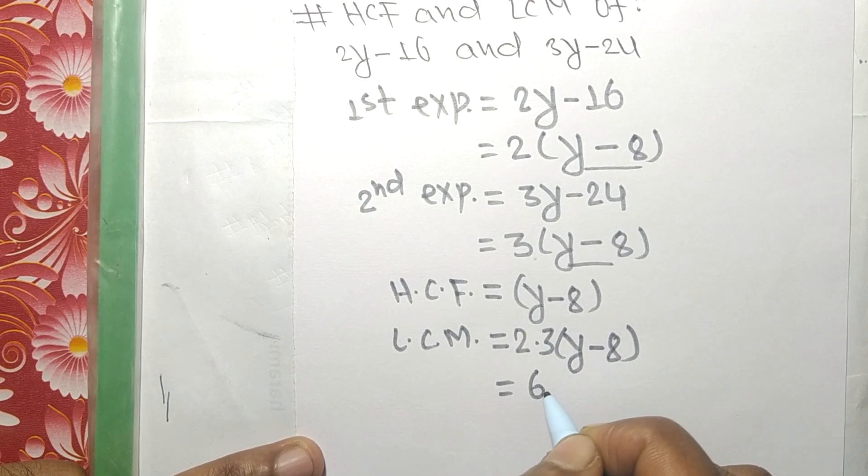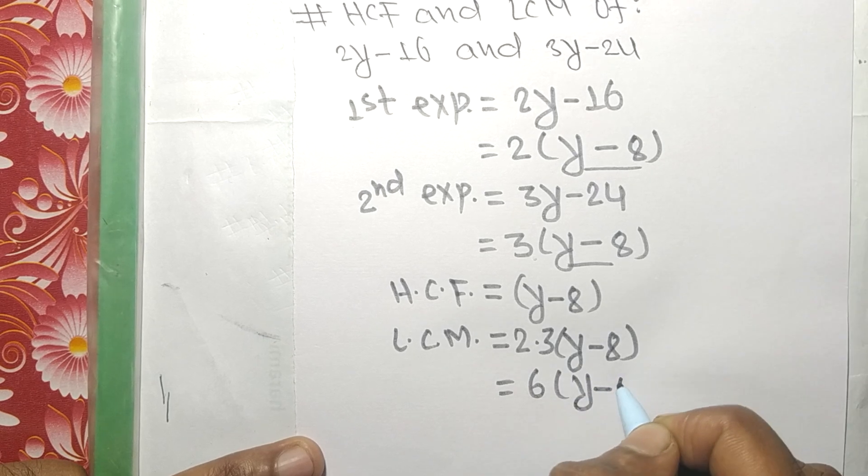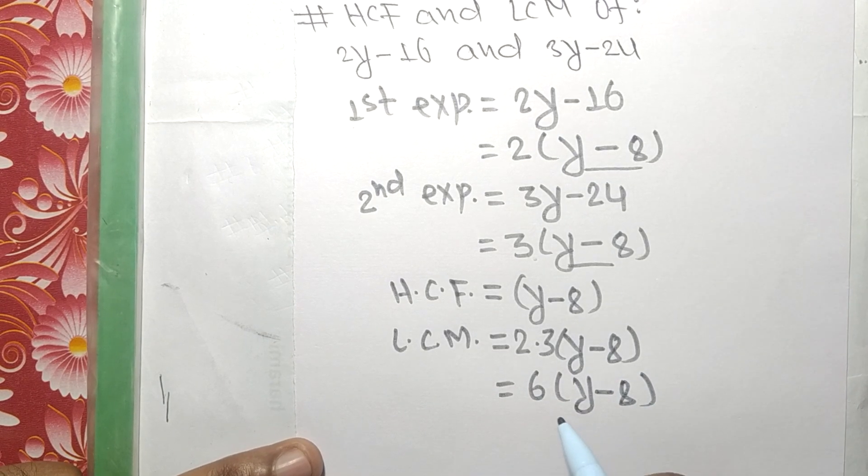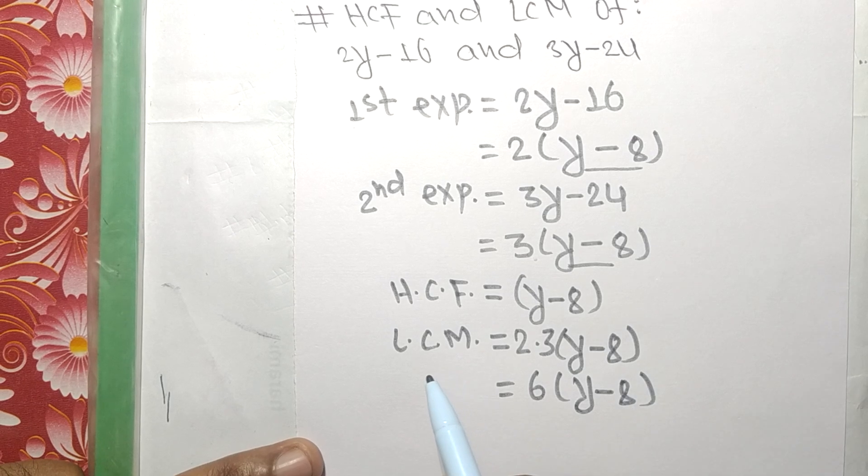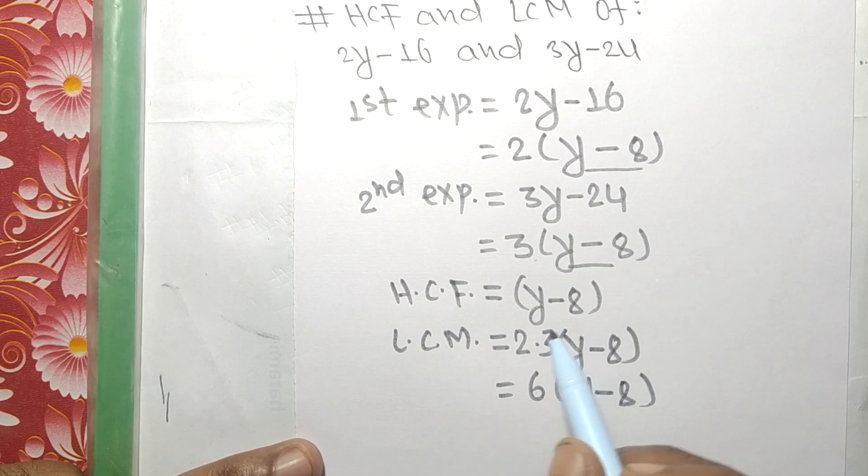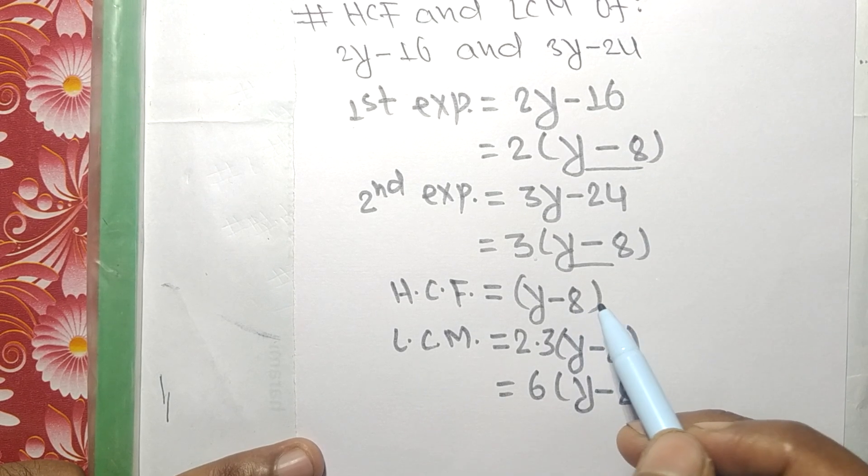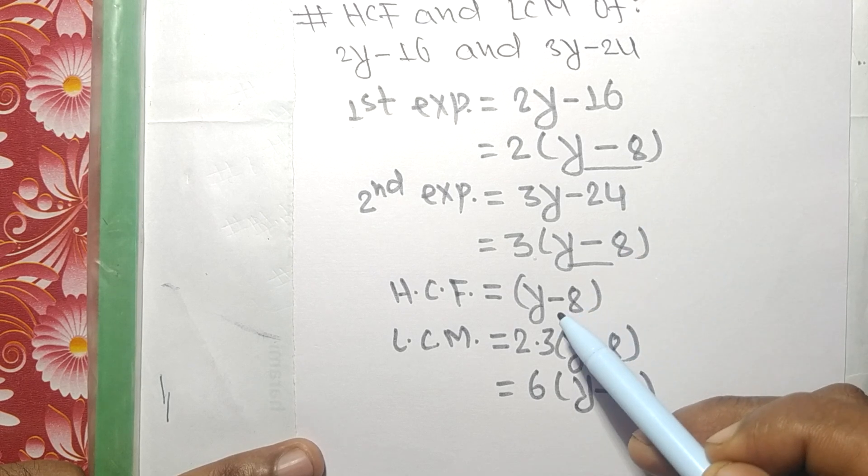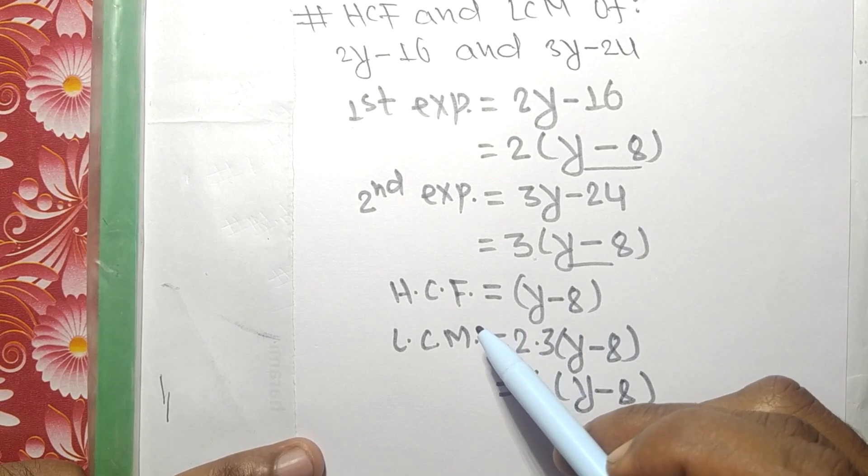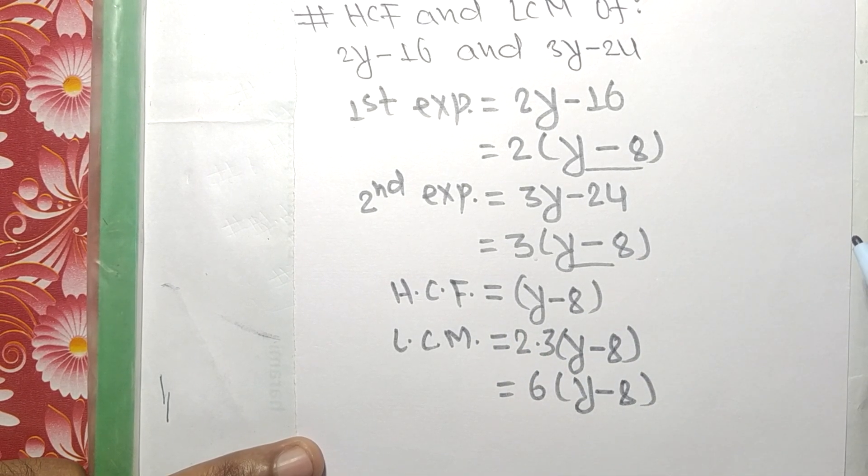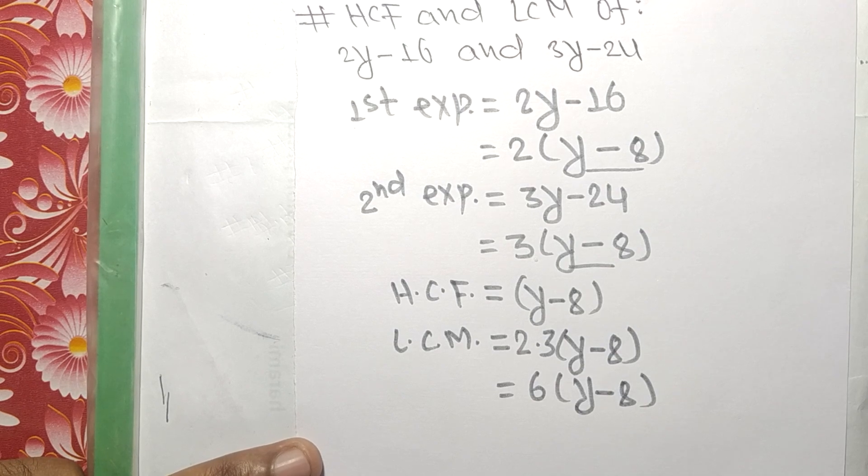which equals 6, and this y minus 8. So 6 times (y minus 8) is the LCM, and y minus 8 only is common in both, so y minus 8 is the HCF. This much for today and thanks for watching.